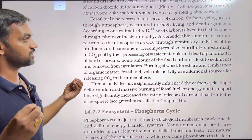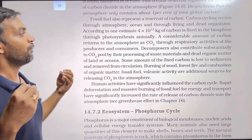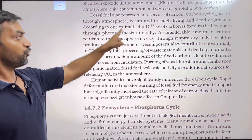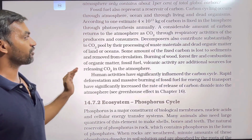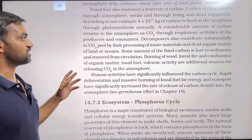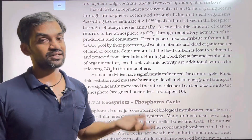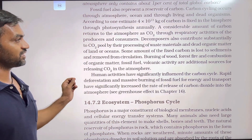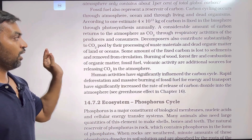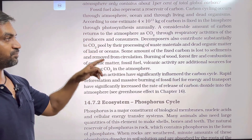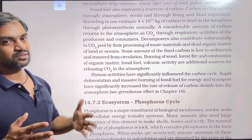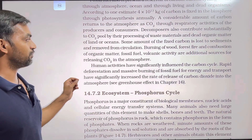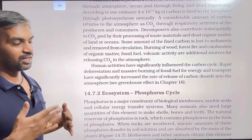According to one estimate, 4 × 10¹³ kg of carbon is fixed in the biosphere through photosynthesis annually. Carbon is returned to the carbon dioxide pool by decomposition — the processing of waste material and dead organic matter on land and in the ocean. Some amount of fixed carbon is lost to sediments and removed from circulation.